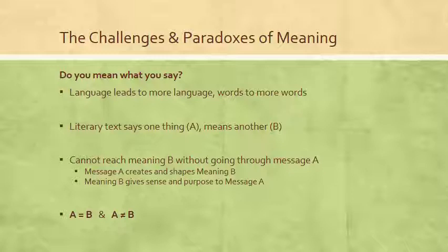We can't reach meaning B without understanding the literal words on the text. Because message A creates and shapes meaning B, yet meaning B gives sense and purpose to message A — they're inextricably related to one another. So we get to this ultimate paradox: A equals B, the text equals the meaning, yet the message of the text is different and does not equal the meaning, because the meaning will of course be in different words.